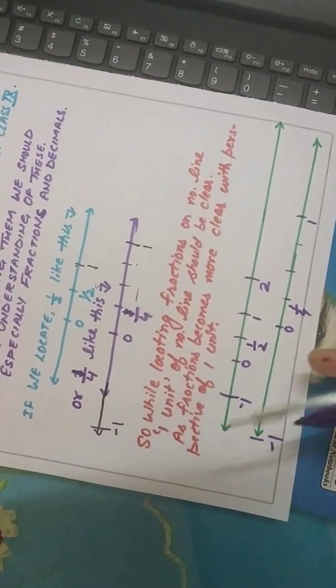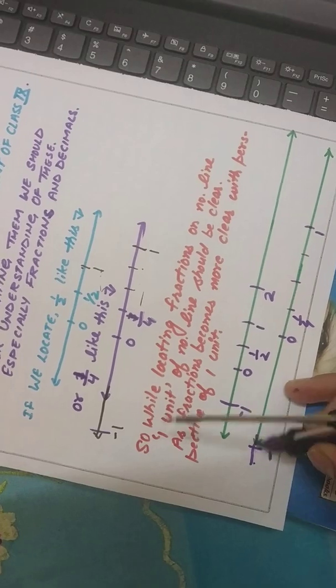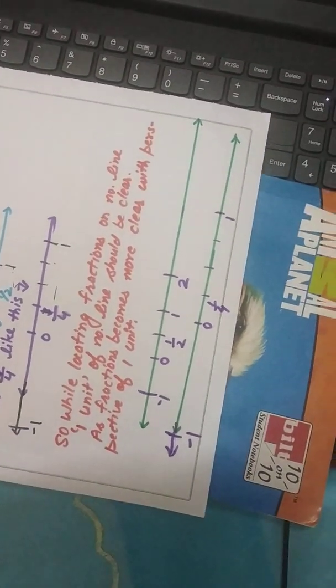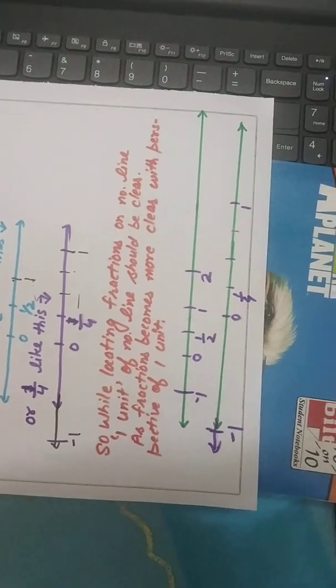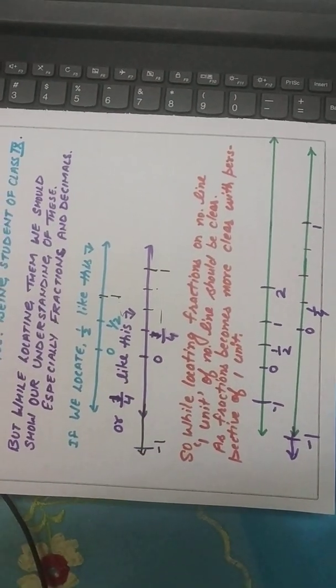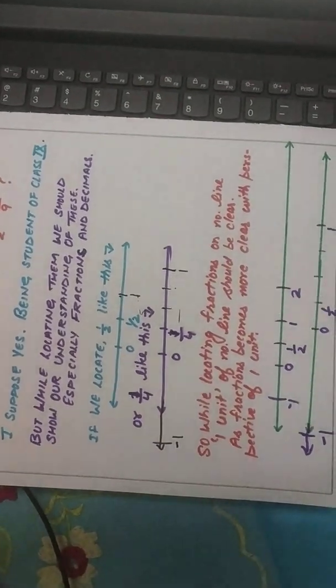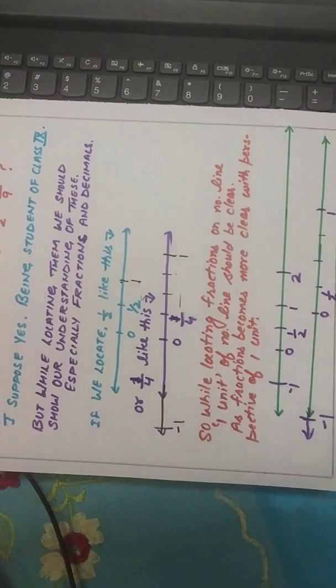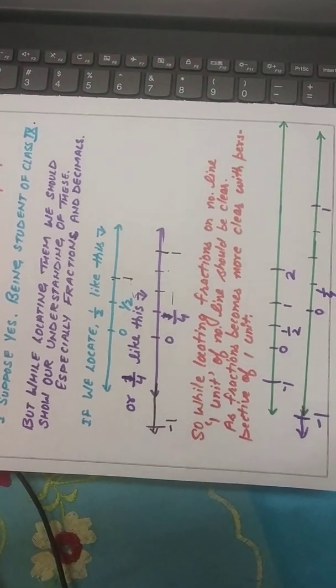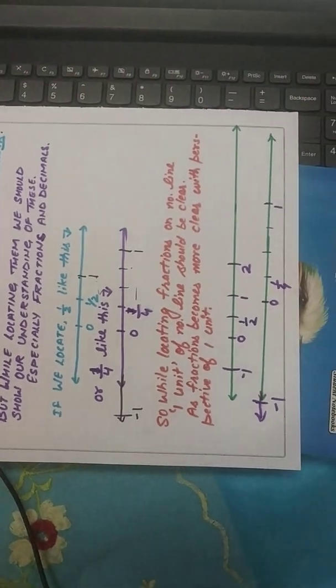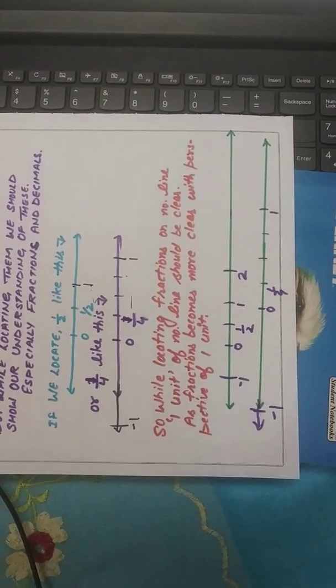You may extend your number line later. Or you may not put the arrows before. So this is how you have to locate. If there are fractions or decimals, we being common man have a proper understanding of one unit. To locate your fraction and decimals, make sure the boundary, the one unit should be clear.